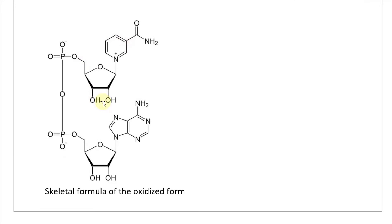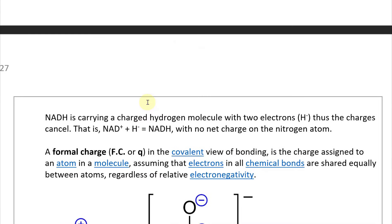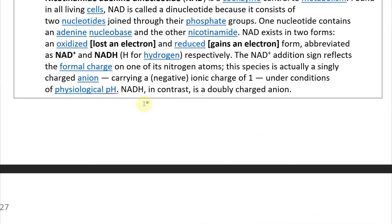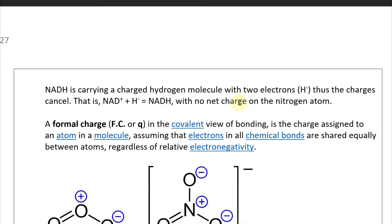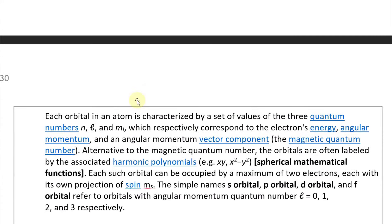All that was to illustrate the formal charge of the nitrogen atom in NAD. The NAD⁺ addition sign reflects the formal charge on one of its nitrogen atoms. Even though the overall NAD⁺ molecule is a singly charged anion — negative one — and NADH is a doubly charged anion — negative two — the notation NAD⁺ and NADH refers specifically to the formal charge on the nitrogen atom.